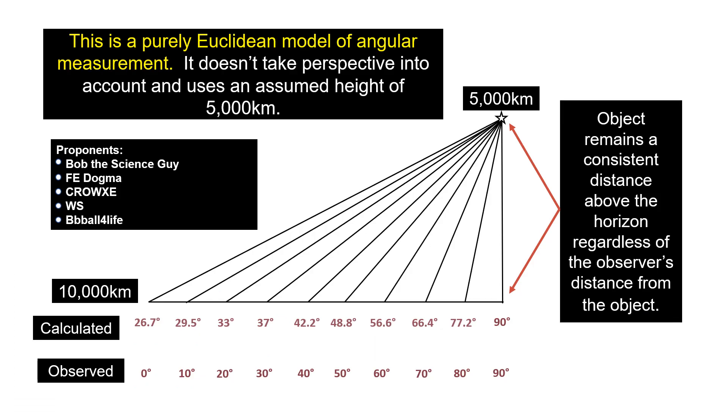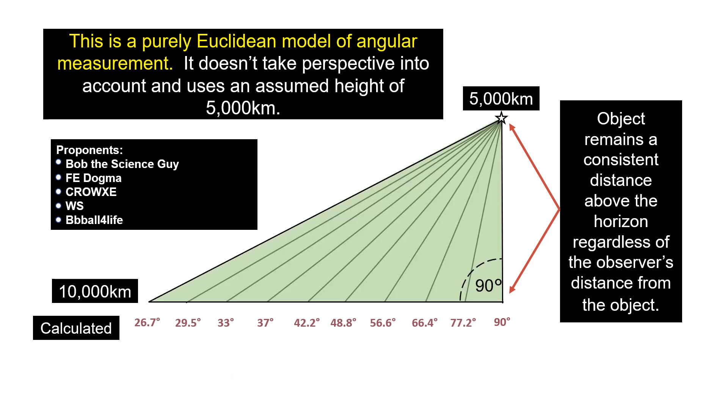So it starts off with 'this is a purely Euclidean model of angular measurement.' Well, that is correct, because we use geometry to measure physical shapes and distances. And in this case, we are using right triangles. Therefore, we can use trigonometry.